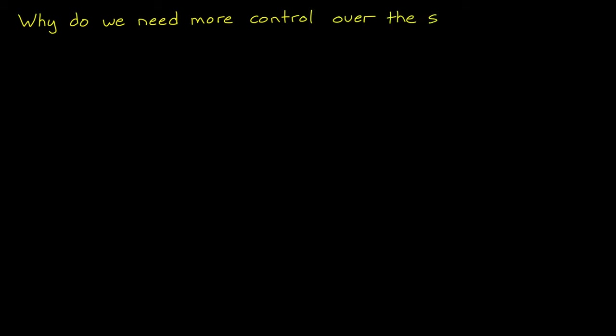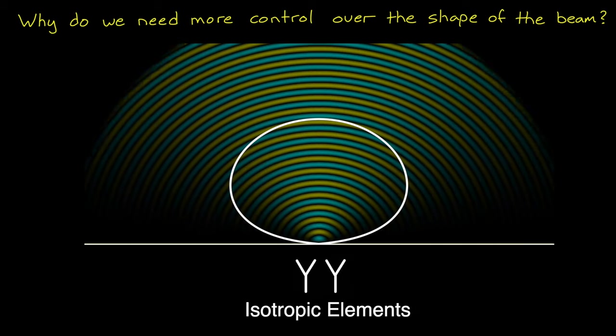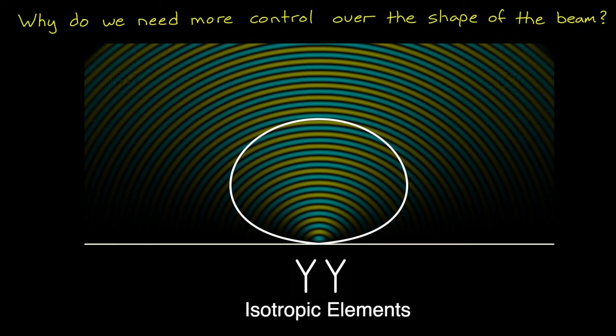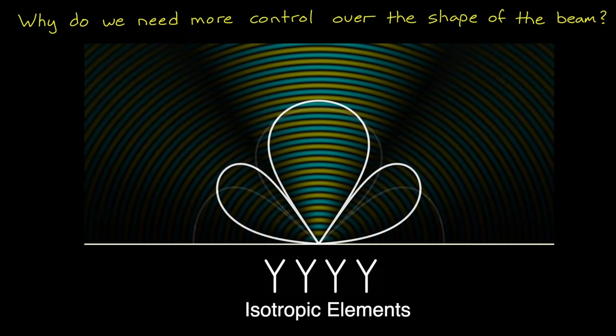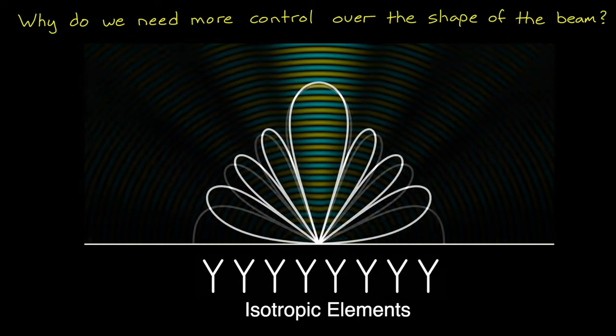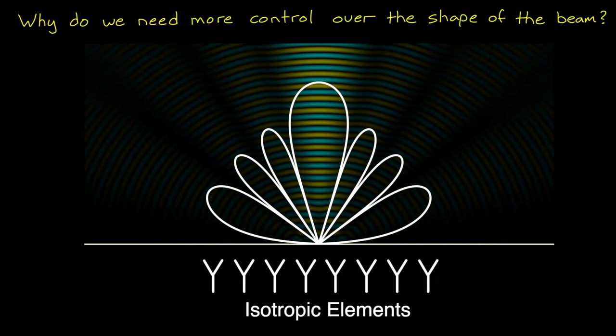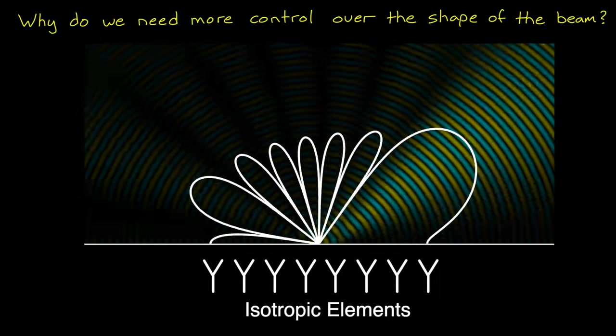Before we get into beamforming, I first want to talk about why we might need more control over how we form the beam than what we just covered in the last video. We know we can form a really sharp beam with an array. In general, the more elements in the array, the sharper the main lobe of the beam. And then through phase shifting, the beam can be steered.